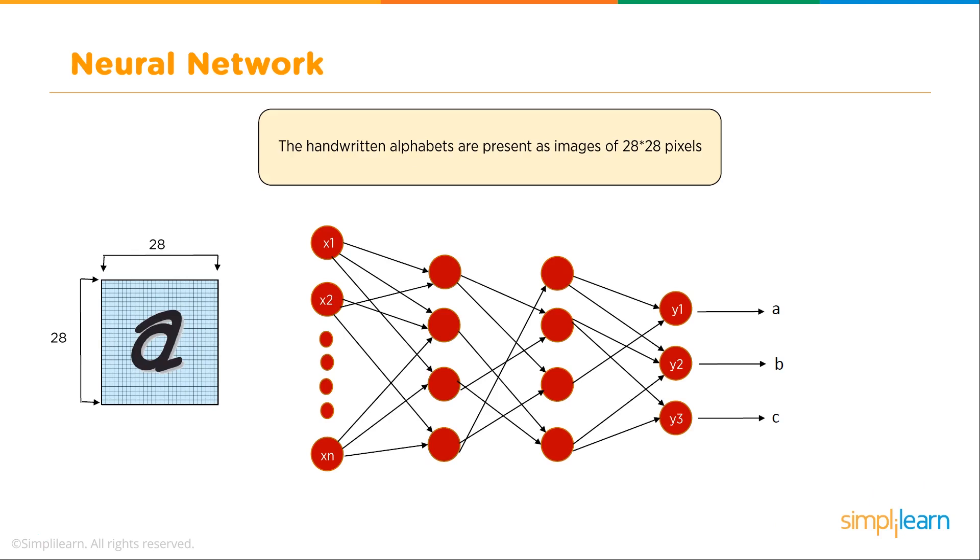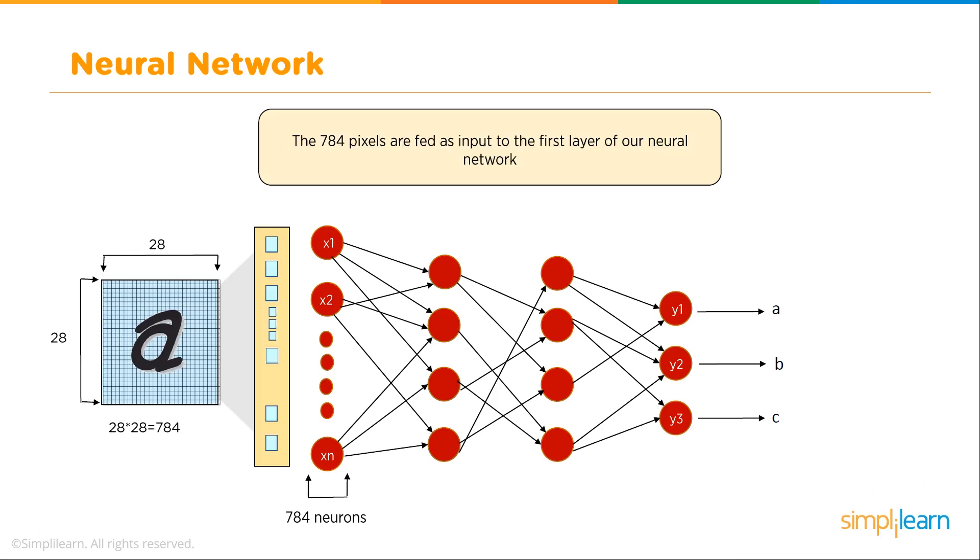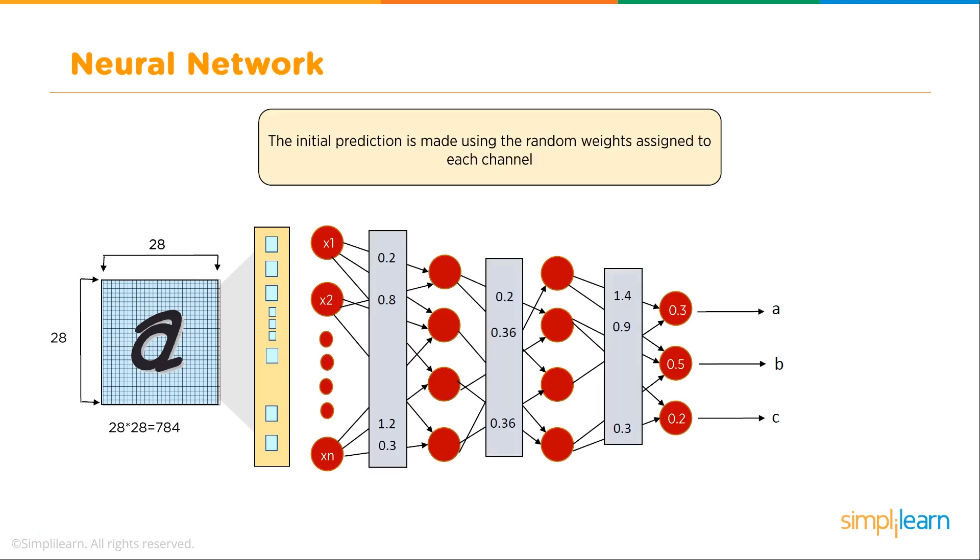We'll look at the letter A written out on 28 by 28 pixels. The handwritten alphabets are presented as images of 28 by 28 pixels. That image comes in with 784 neurons, that's 28 times 28. The initial prediction is made using random weights assigned to each channel.